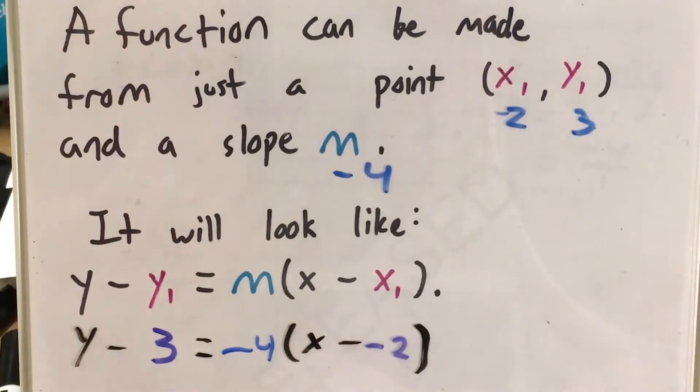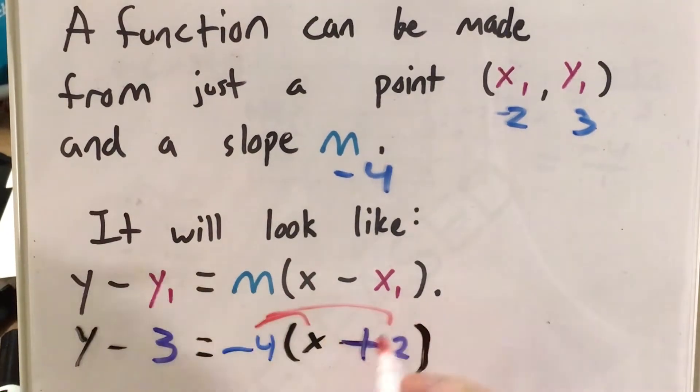First, I notice that minus negative 2 is the same as plus 2. Now I can use the distributive property to figure out our y-intercept. I distribute -4 into (x + 2), which gives me -4x - 8.